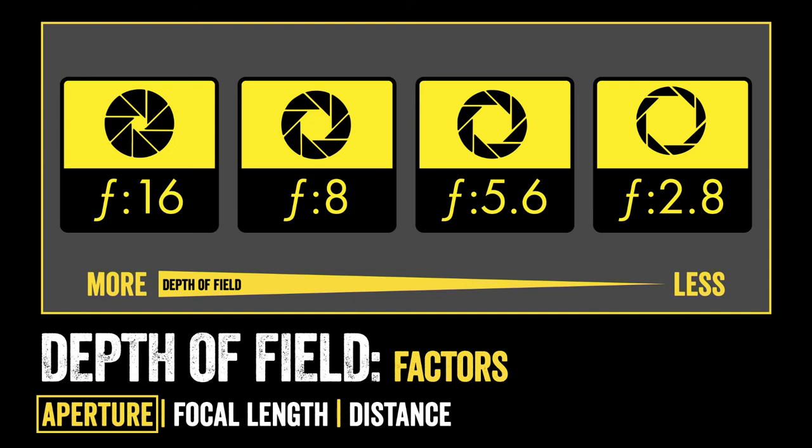In relation to depth of field, as you increase the aperture, you decrease the depth of field. Remember that as we increase the aperture, the number gets smaller. So a small aperture like F16, as you see on the left, has a wider depth of field than F2.8, as you see on the right, which has a very shallow depth of field.